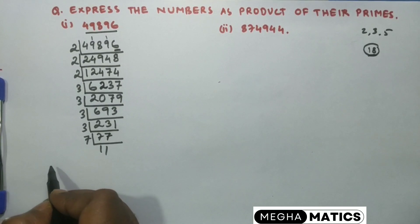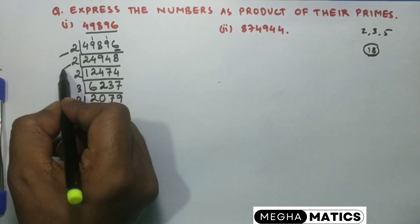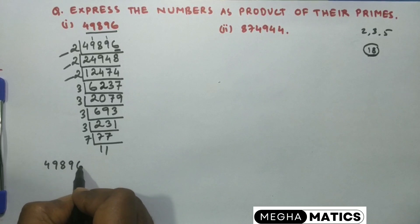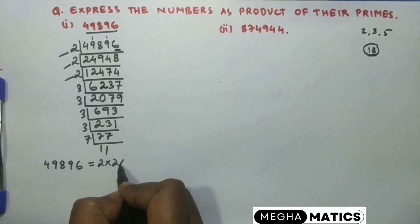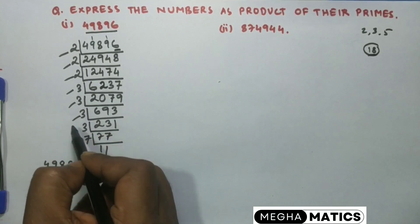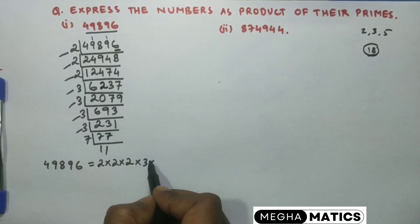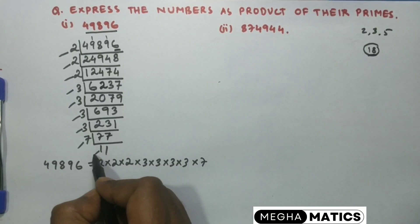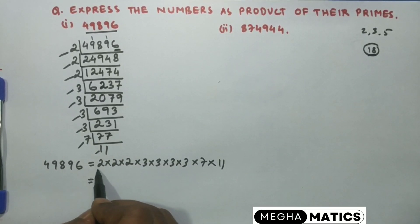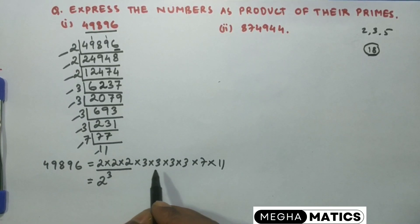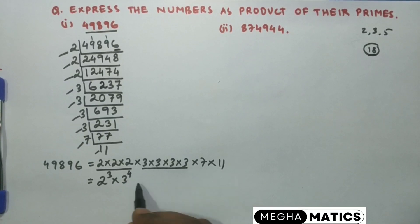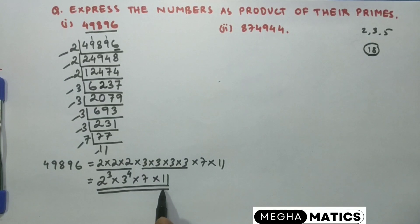So as the product of prime factors of 49,896, we are getting: three 2s — so we write 2 cubed — then four 3s — so we write 3 to the power 4 — then into 7 and into 11. So the product of prime factors is 2³ × 3⁴ × 7 × 11.